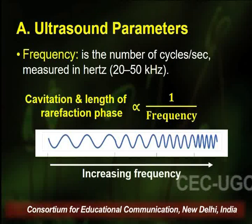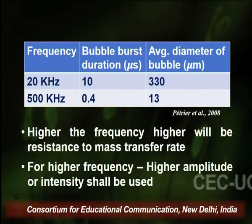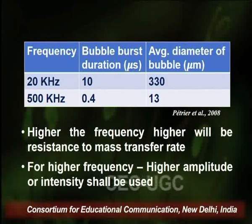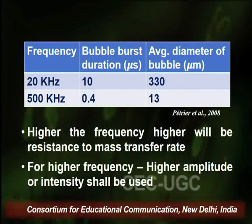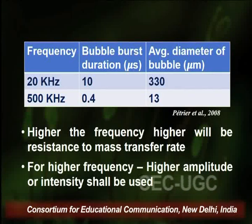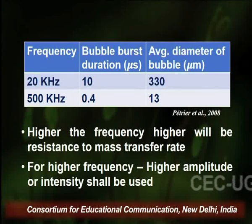Increasing frequency negatively impacts extraction efficiency. In an experiment where frequency was increased from 20 kHz to 500 kHz: at 20 kHz, the average time for a bubble to burst was 10 microseconds and average bubble diameter was 330 micrometers. At 500 kHz, average burst time decreased to 0.4 microseconds and average diameter decreased to 13 micrometers. Higher frequency also causes resistance in the mass transfer rate, further decreasing extraction efficiency.